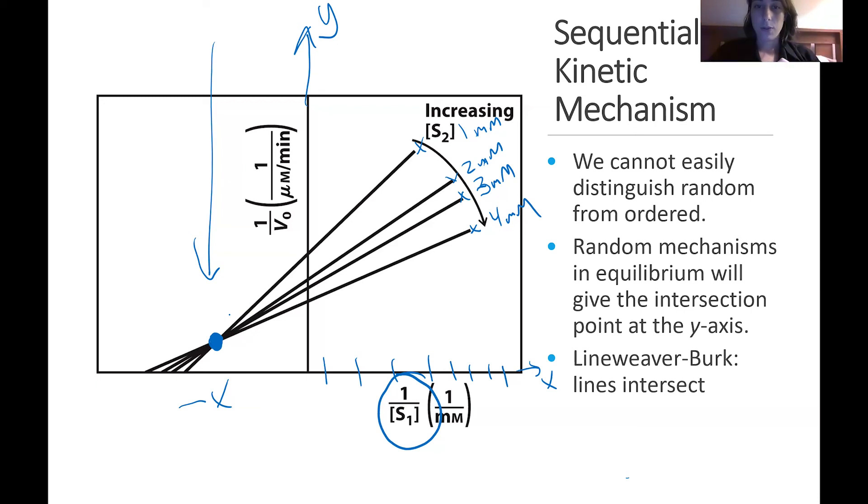So these are two things you're looking for. As concentration increases, you'll see that slope is going to change, going downward, and we'll see that where all the lines intersect is in the negative x region.